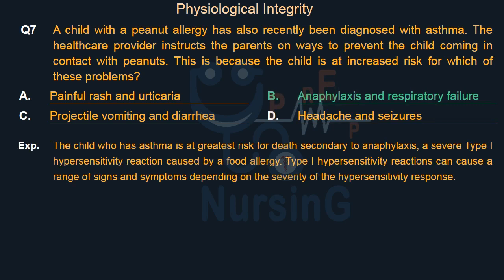The child who has asthma is at greatest risk for death secondary to anaphylaxis, a severe type I hypersensitivity reaction caused by a food allergy. Type I hypersensitivity reactions can cause a range of signs and symptoms depending on the severity of the hypersensitivity response.